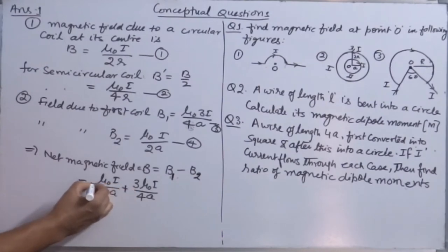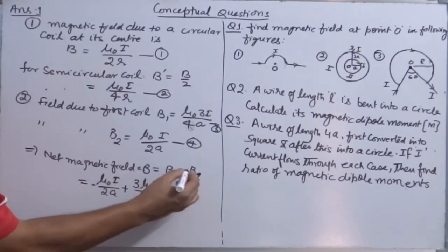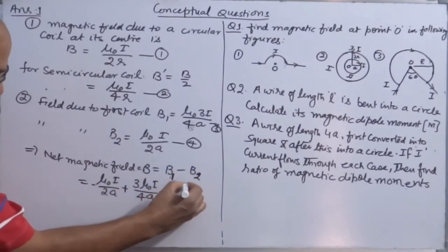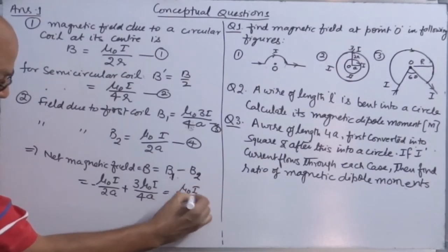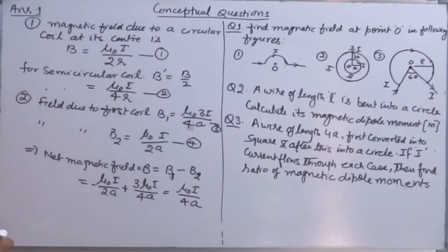You can make it plus because B₁ is larger, so it will be μ₀I/4A. This is actually 3/4 and this is 1/2. This is 0.75μ₀I/A, this is 0.5μ₀I/A. So 0.25μ₀I/A.